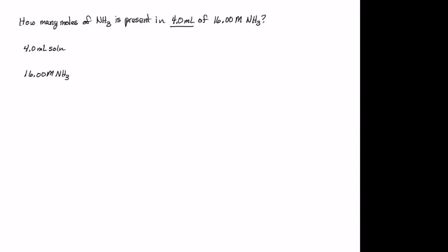When I see a concentration unit, the first thing I'm going to do is separate it into its individual units. So 16.00 molar becomes 16.00 moles of NH3 per 1 liter of solution. By separating out concentration units, you can see that a concentration unit actually has 2 units associated with it, whereas the 4.0 milliliters of solution had only 1 unit associated with it.